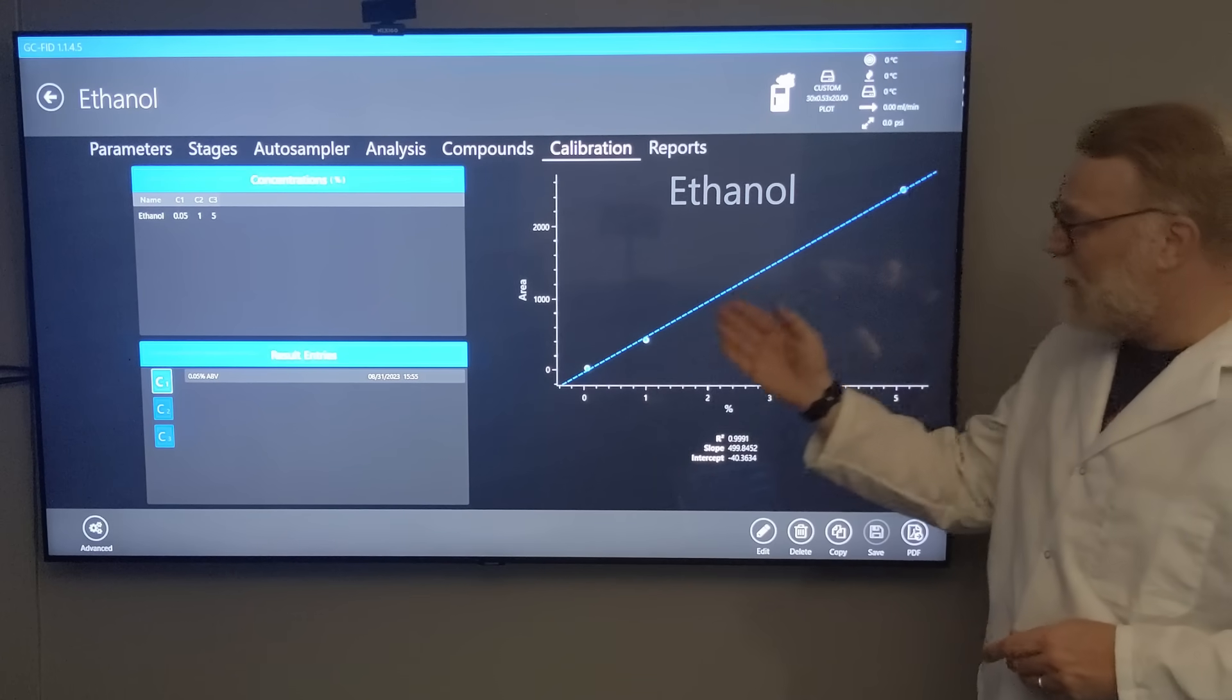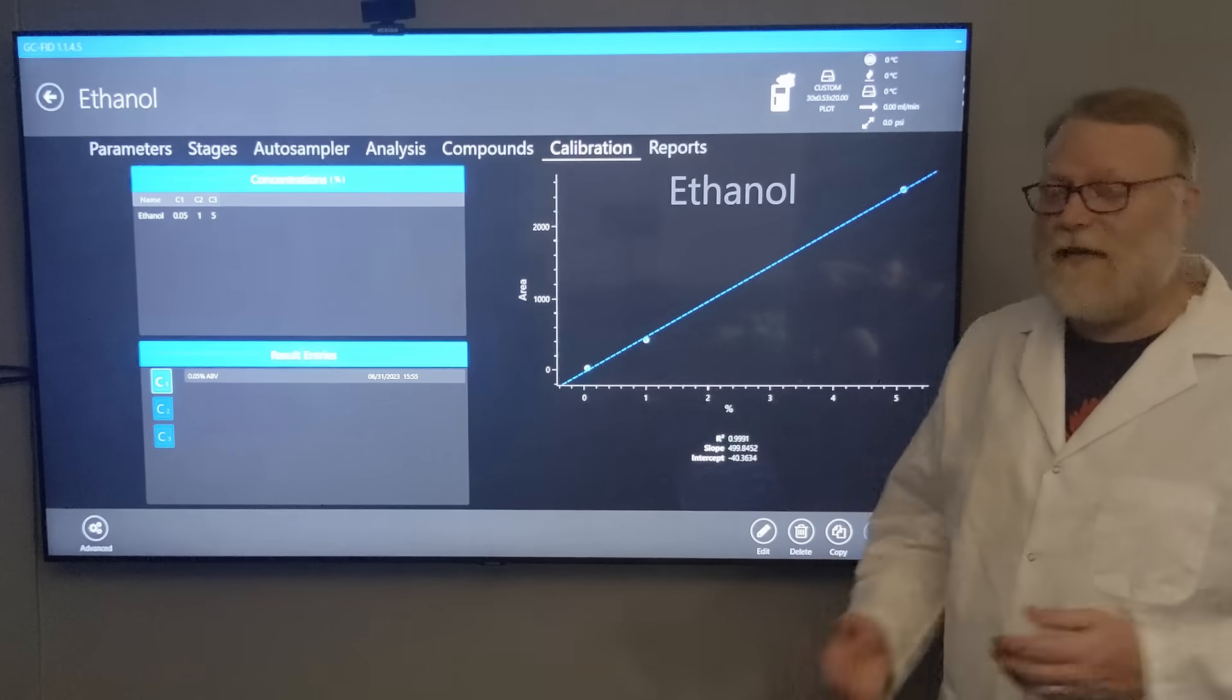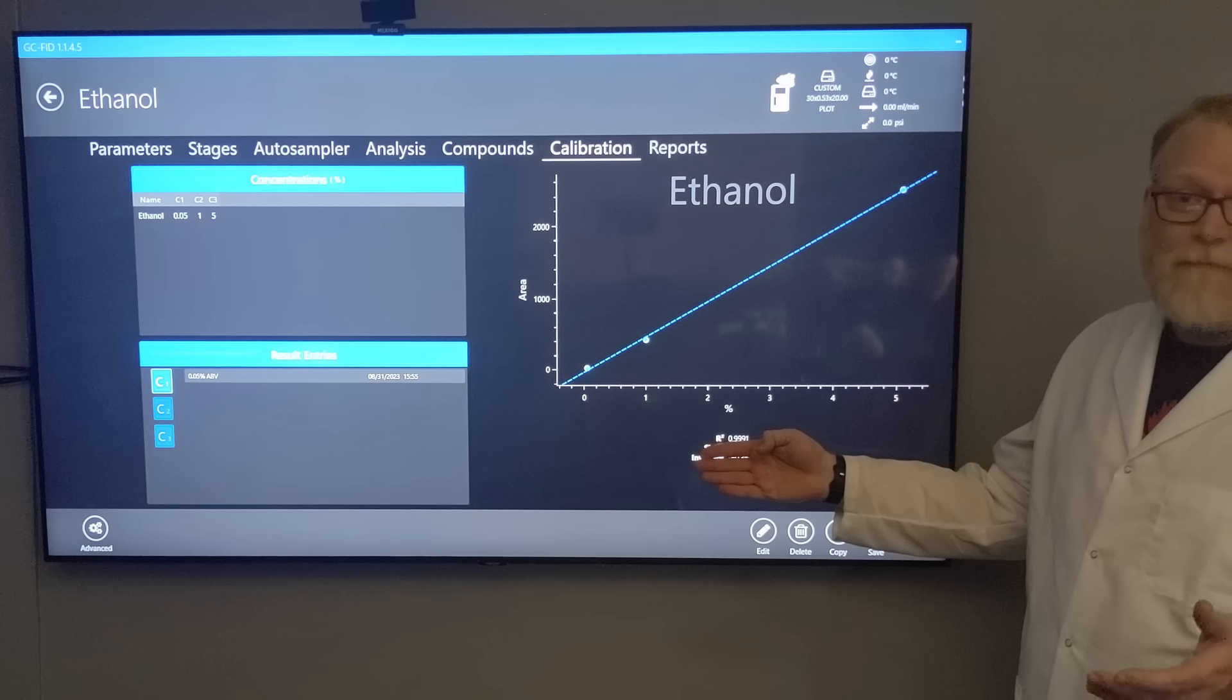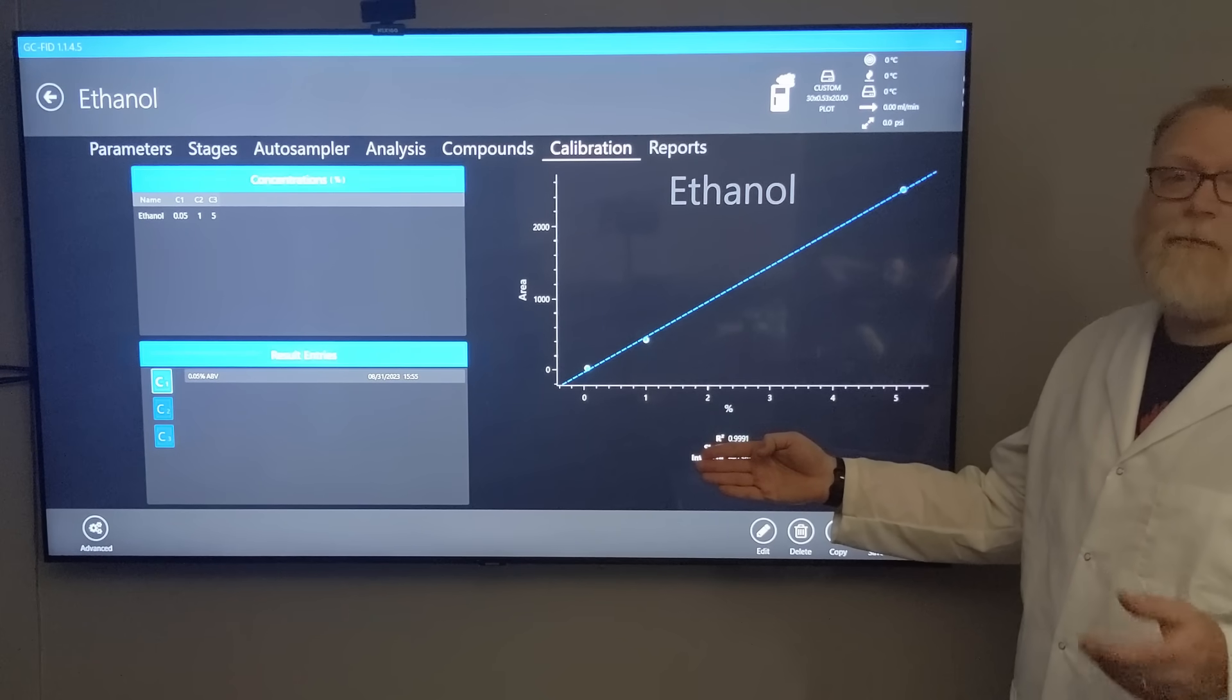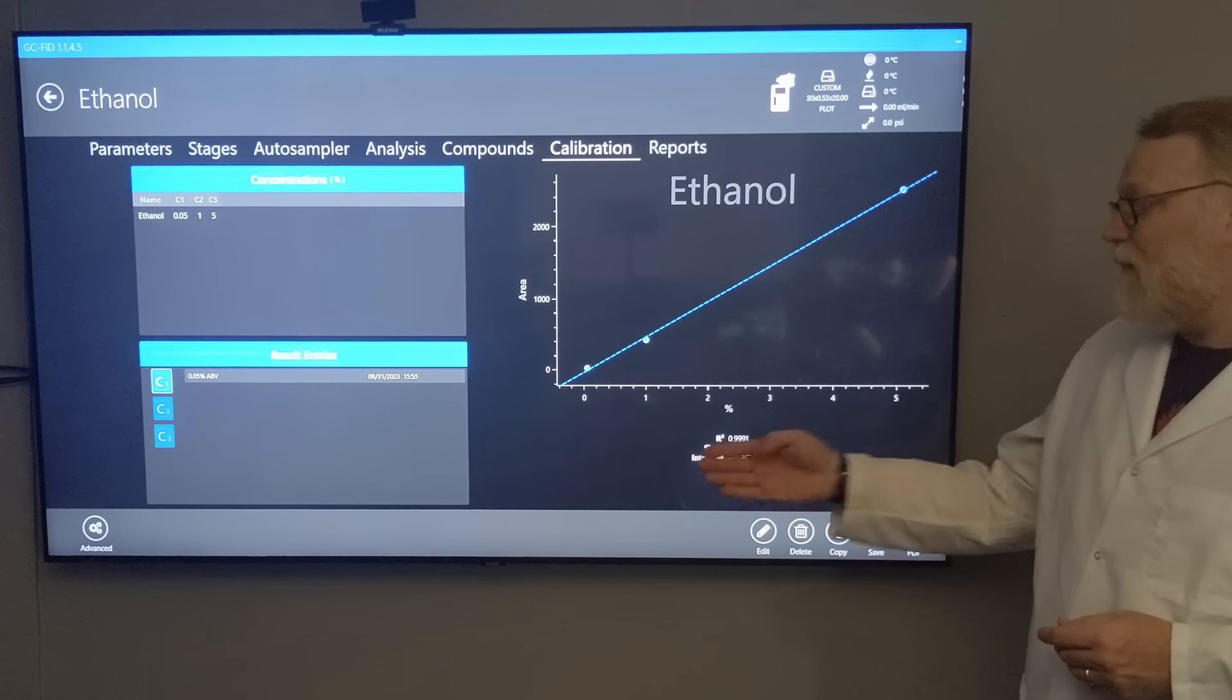We get an r-squared value not quite 1, but very close at 0.9991 - that's a really good curve. It also gives us our slope of 499.8 and our intercept of -40.4.